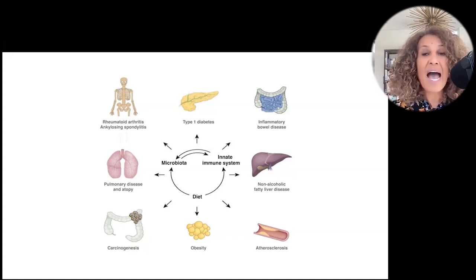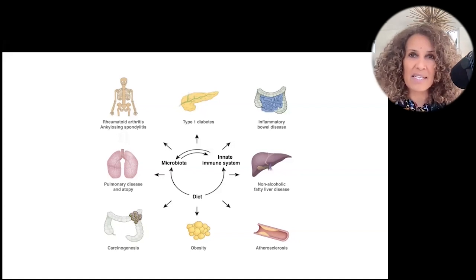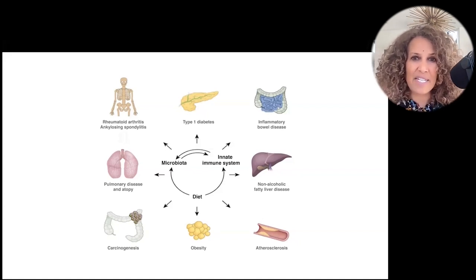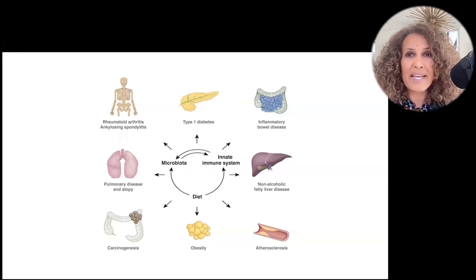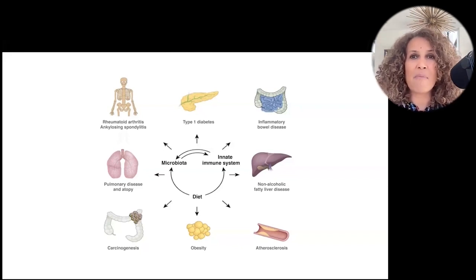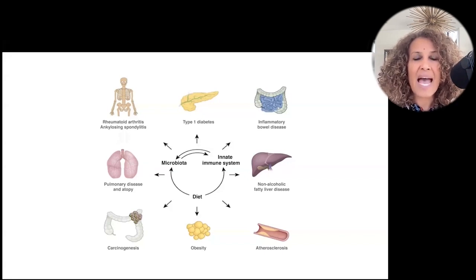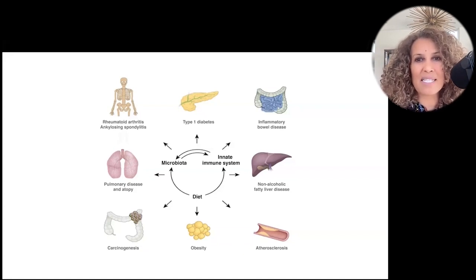We'll be having more brilliant cardiologists on during the program who will be talking about heart disease really as a dietary disease. Obesity, even cancer — colon cancer, for example — we know that there are major disruptions in the microbiome that we can link to certain types of colon cancer, certain kinds of lung disease, asthma, allergies, atopy, allergic reactions, and other autoimmune diseases like rheumatoid arthritis and ankylosing spondylitis.